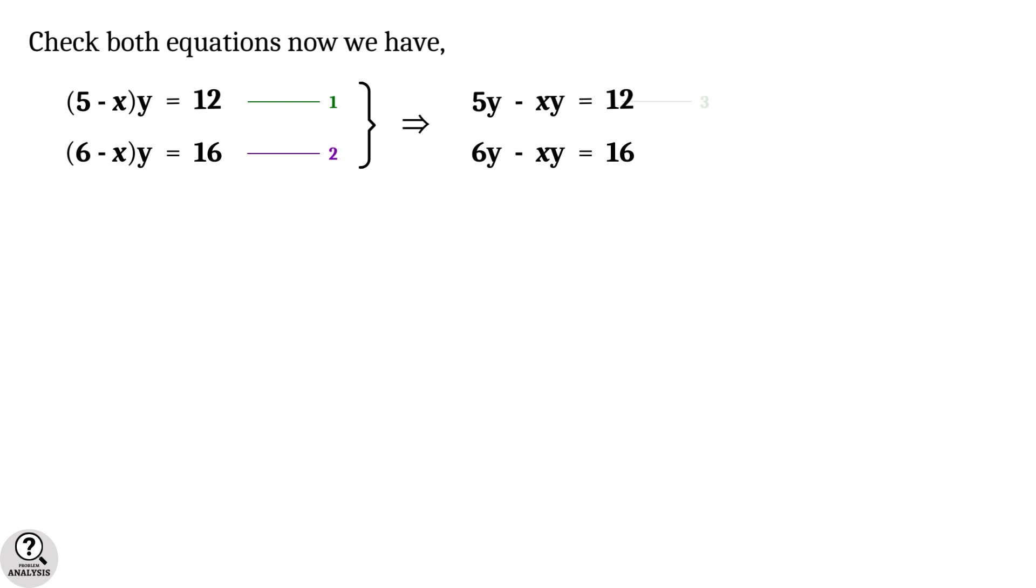I am putting them as equation 3 and equation 4. As you can see, the term minus xy is common in both the equations. Therefore, to avoid that term, subtract equation 3 from equation 4. Then minus xy is cancelled. 6y minus 5y equal to y, and 16 minus 12 equal to 4. That is what remaining is here, y equal to 4.